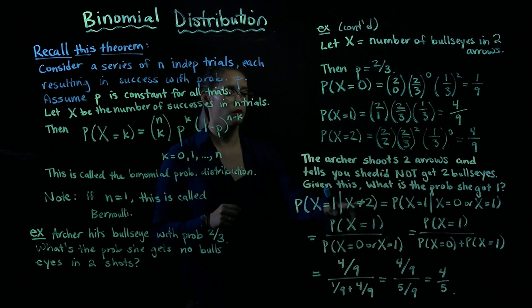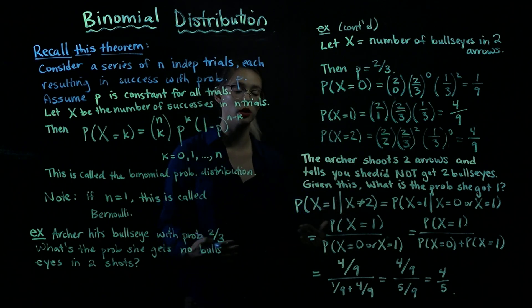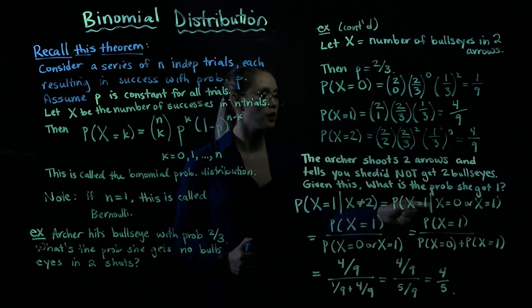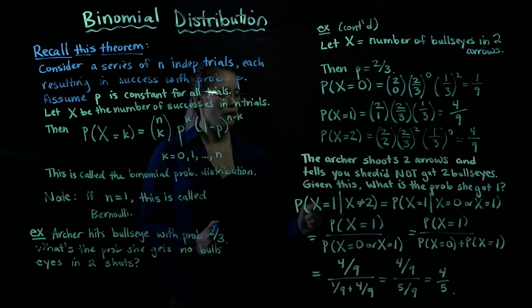Now, we can rework this a little bit. If x is not two, what could it be? It could be zero or it could be one. She could have zero bullseyes or one bullseye. So we rewrite this as a probability x equals one, given that x is either zero or one.